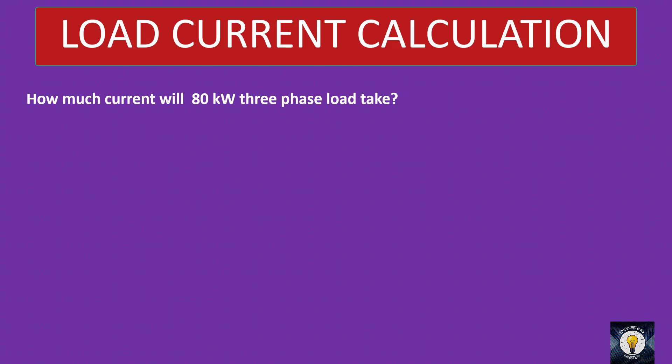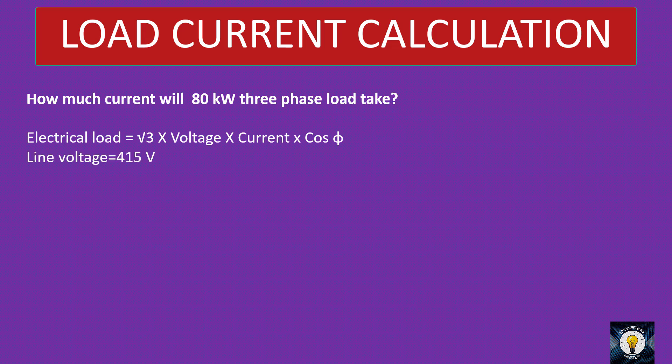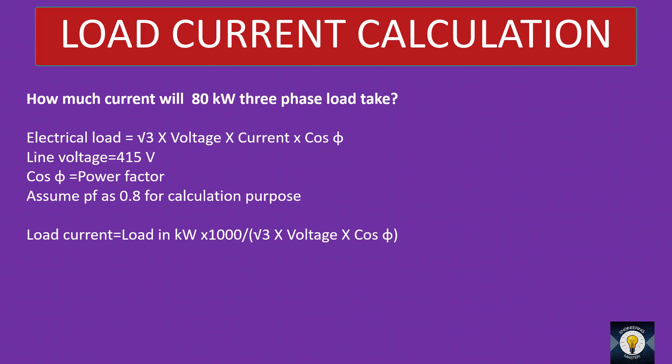Let's calculate the load current of an 80 kW three-phase load. The equation is: electrical load equals root 3 into voltage into current into cos φ. In three phase, voltage is line voltage — this may vary slightly from country to country, so take your local line voltage. My line voltage is 415 volt. Cos φ is the power factor — assume 0.8 for calculation purposes.